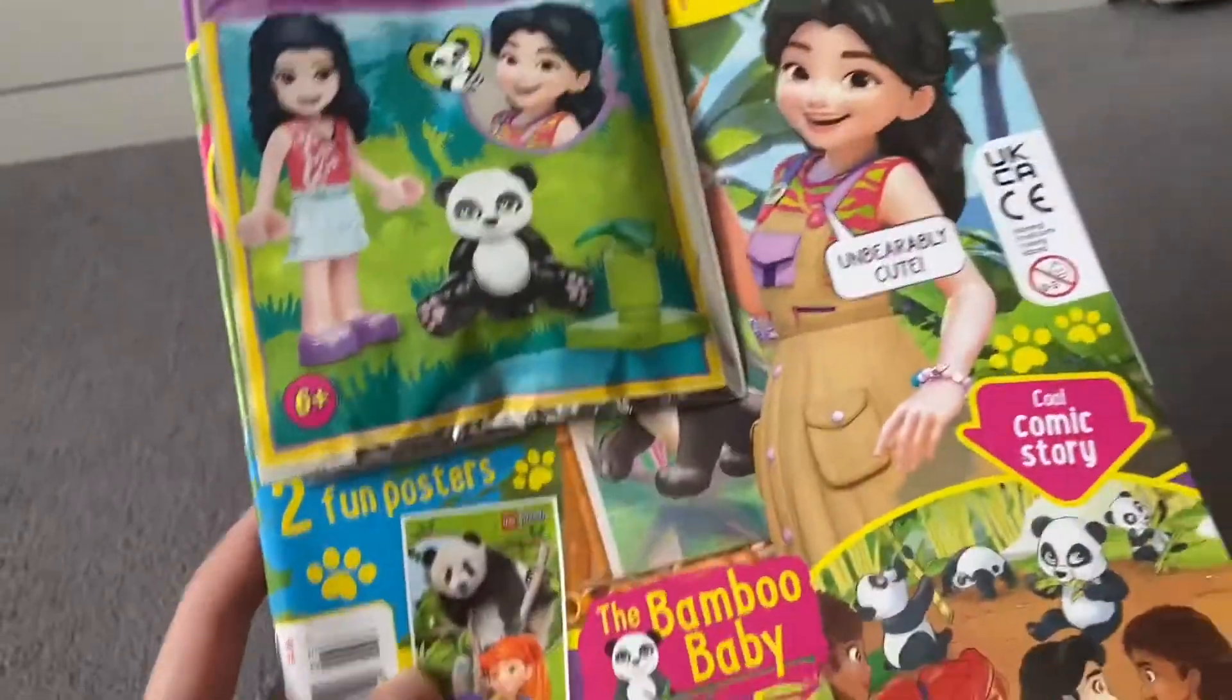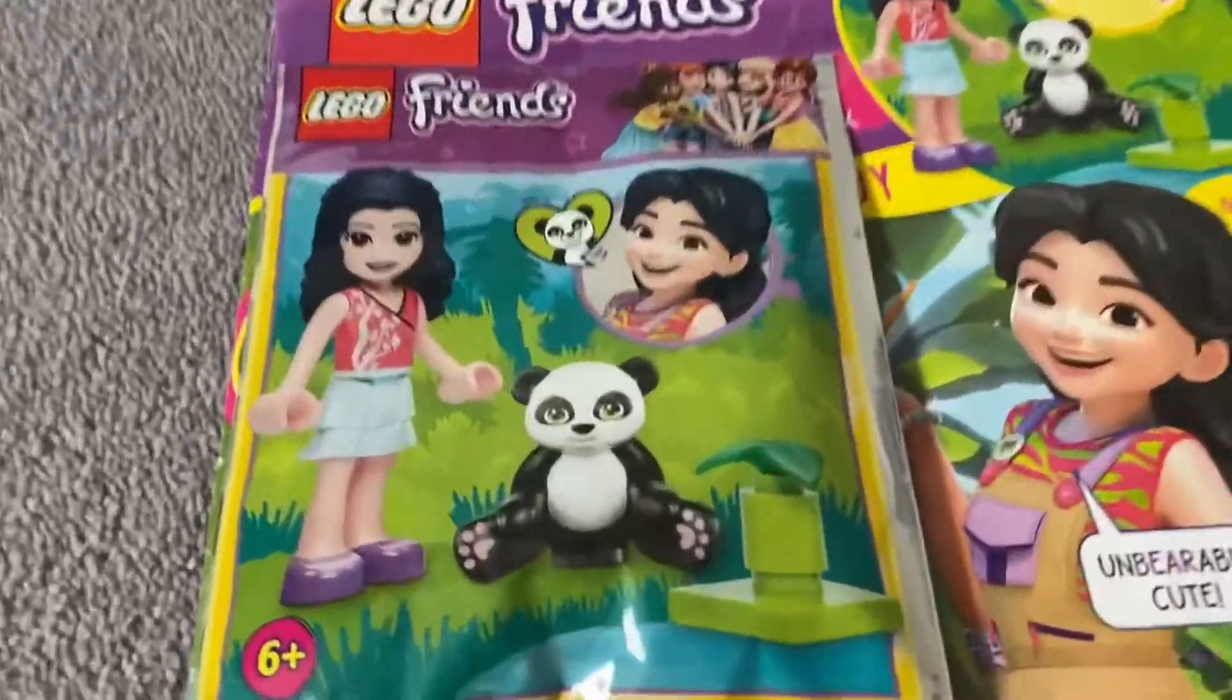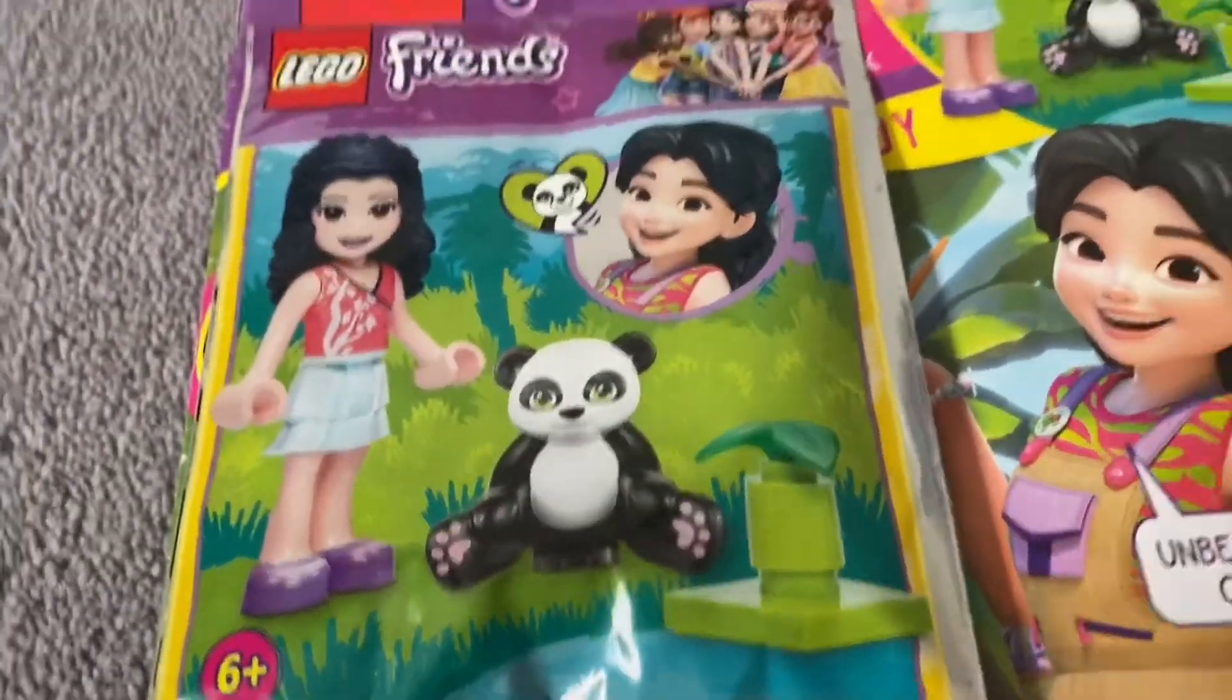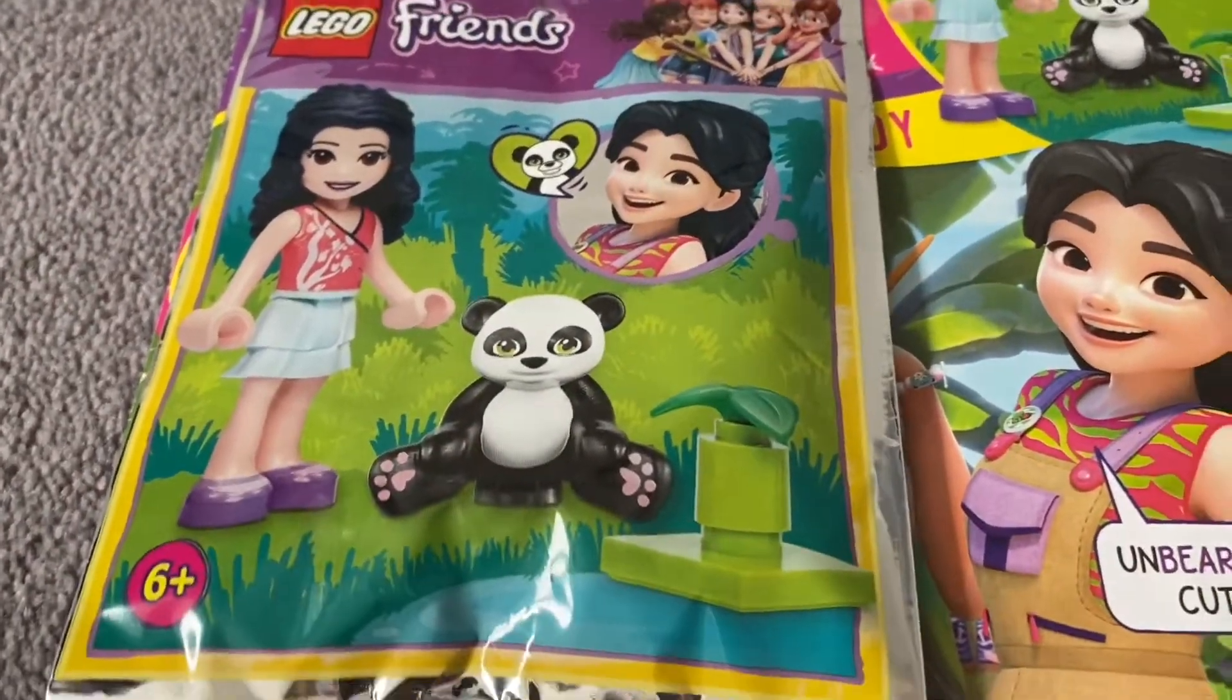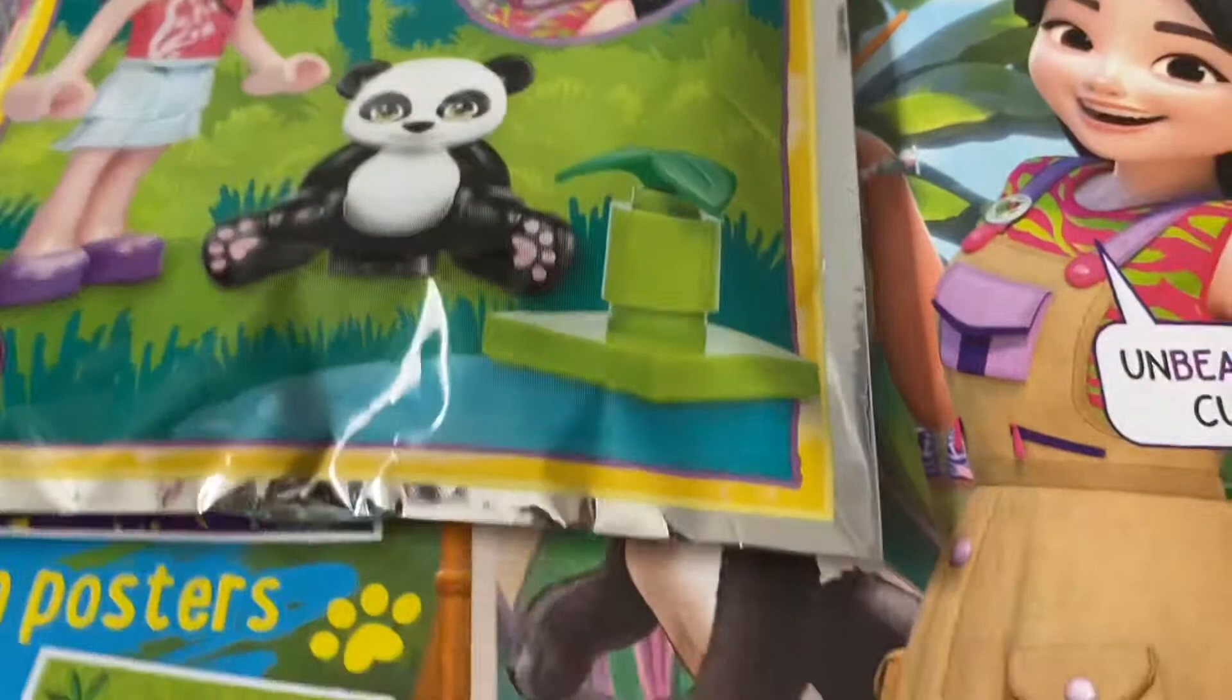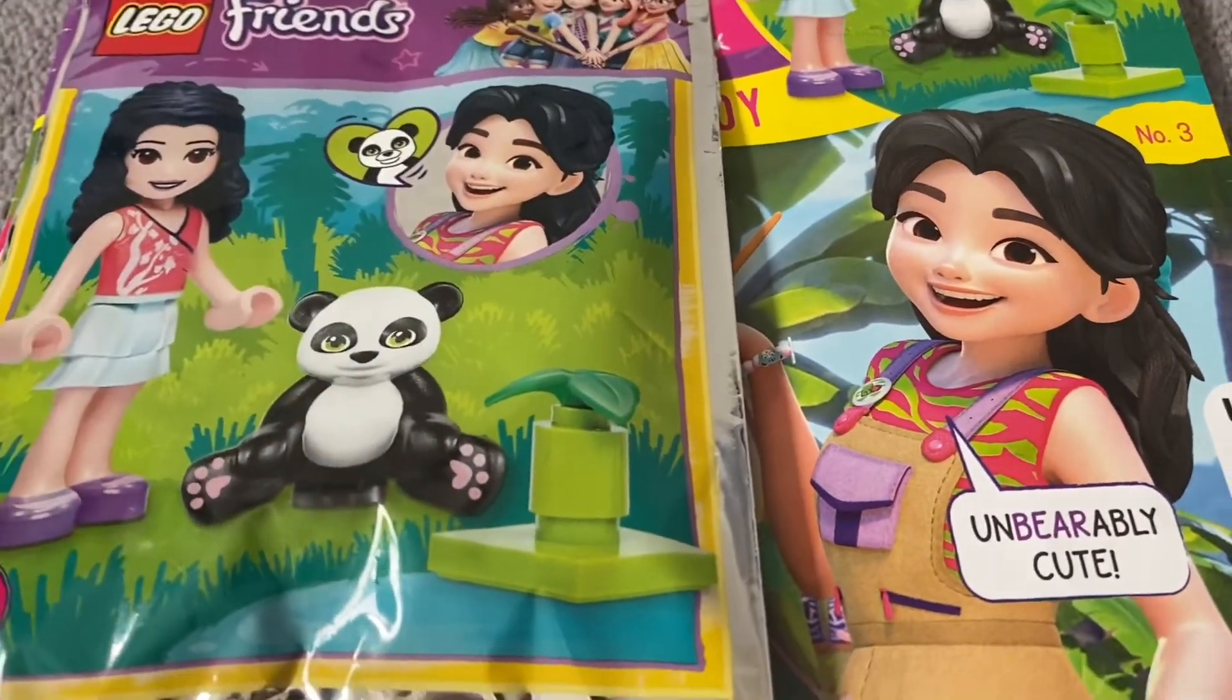Hello guys, welcome back to another LEGO Friends magazine video. Today we have this little Emma minifigure and this panda with a little bamboo shoot, or what's supposed to be bamboo. I got it recently and I can't wait any longer to build it.